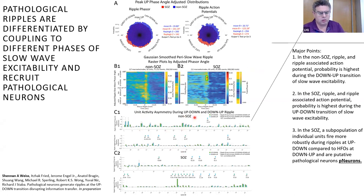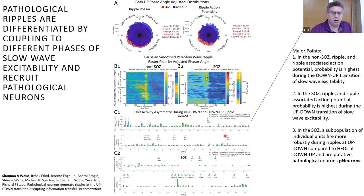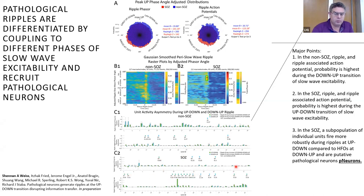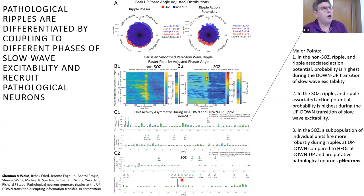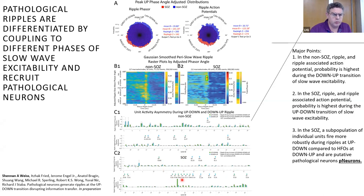To study the mechanism, we compared firing of individual neurons for ripples at the down-to-up versus up-to-down transition. In the non-seizure-onset zone, very few individual neurons showed a firing preference and those that did showed very small effect sizes. However, in the seizure-onset zone, 17% of neurons showed a preference of firing to the up-to-down transition with considerable effect sizes. We hypothesized that these are pathological neurons involved in generating pathological HFOs, epileptiform discharges, and possibly even seizures.